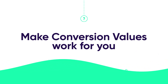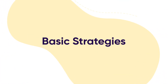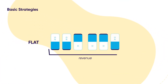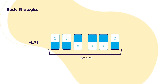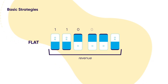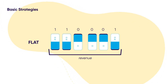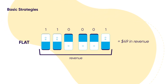Let's keep it simple to start. Here are some basic strategies. First, you can go flat — with this method, all 6 bits measure 1 KPI. In this example, the app developer is using all 6 bits to measure revenue. If the bits were turned on or off as illustrated here — 110001 — due to user activity, the conversion value returned by SK Ad Network is 49, meaning $49 in generated revenue.